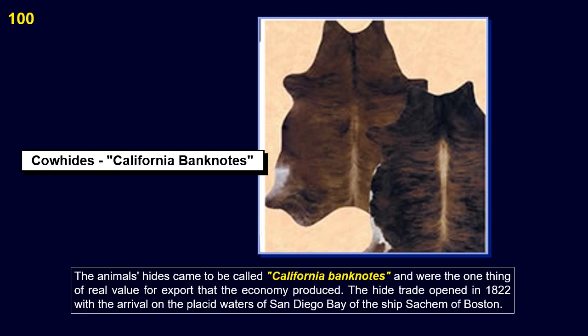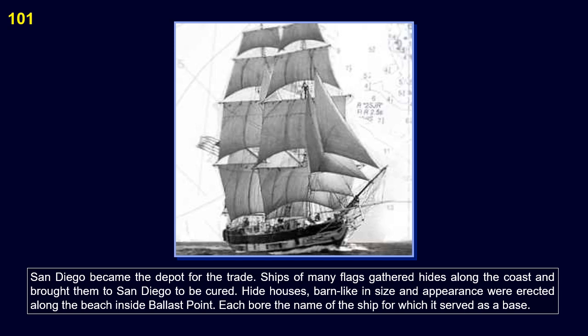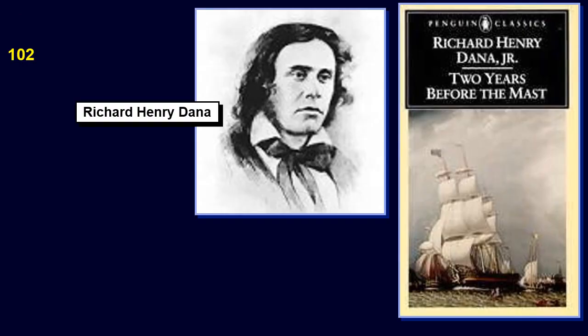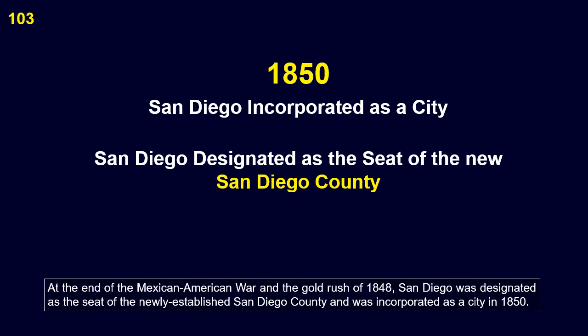The hide trade opened in 1822 with the arrival on the placid waters of San Diego Bay of the ship Sakem of Boston. San Diego became the depot for the trade. Ships of many flags gathered hides along the coast and brought them to San Diego to be cured. Hide houses, barn-like in size and appearance, were erected along the beach inside Ballast Point, each bearing the name of the ship for which it served as a base. An international settlement grew up of crewmen who cleaned the fresh hides and cured them in brine. Richard Henry Dana's immortal description of this community, facetiously called Hyde Park, in his book Two Years Before the Mast, made a fascinating picture. At the end of the Mexican-American War and the Gold Rush of 1848, San Diego was designated as the seat of the newly established San Diego County and was incorporated as a city in 1850.